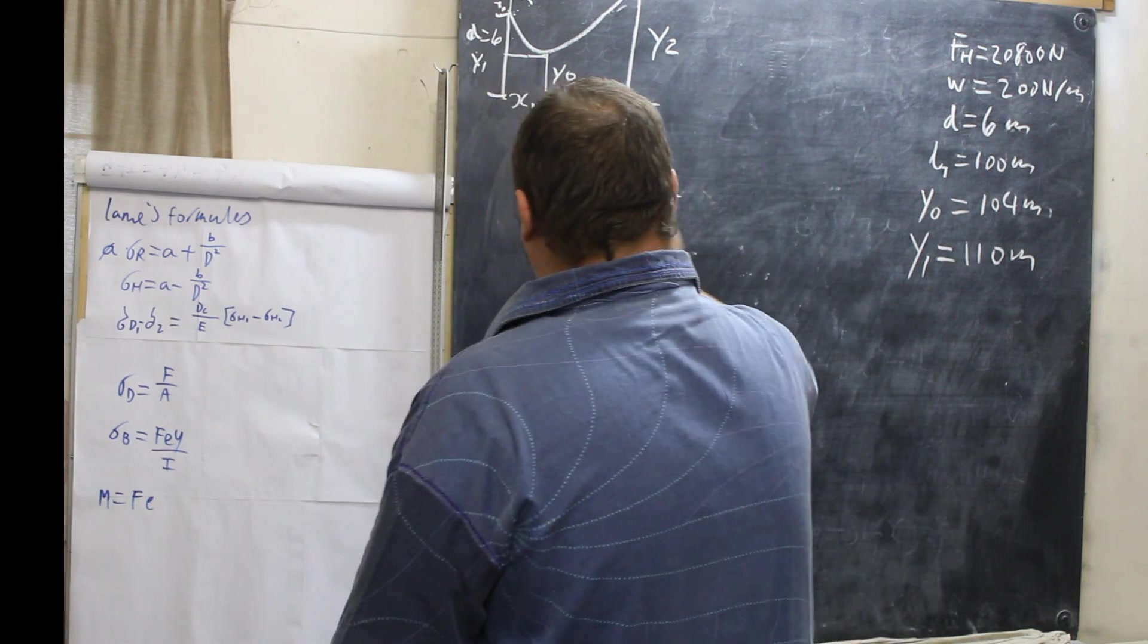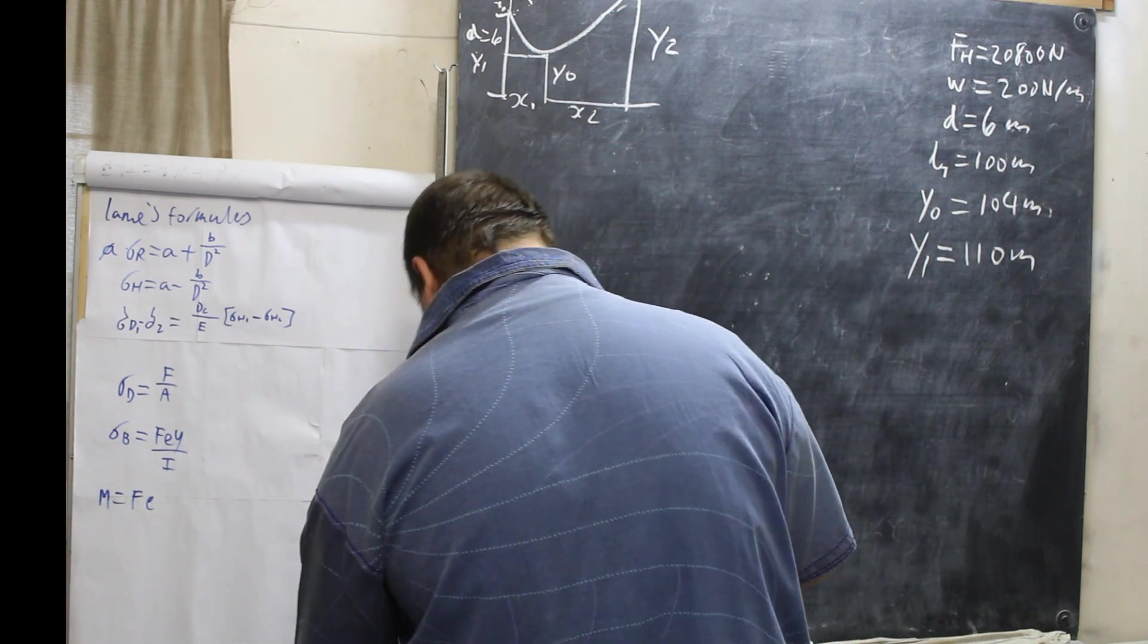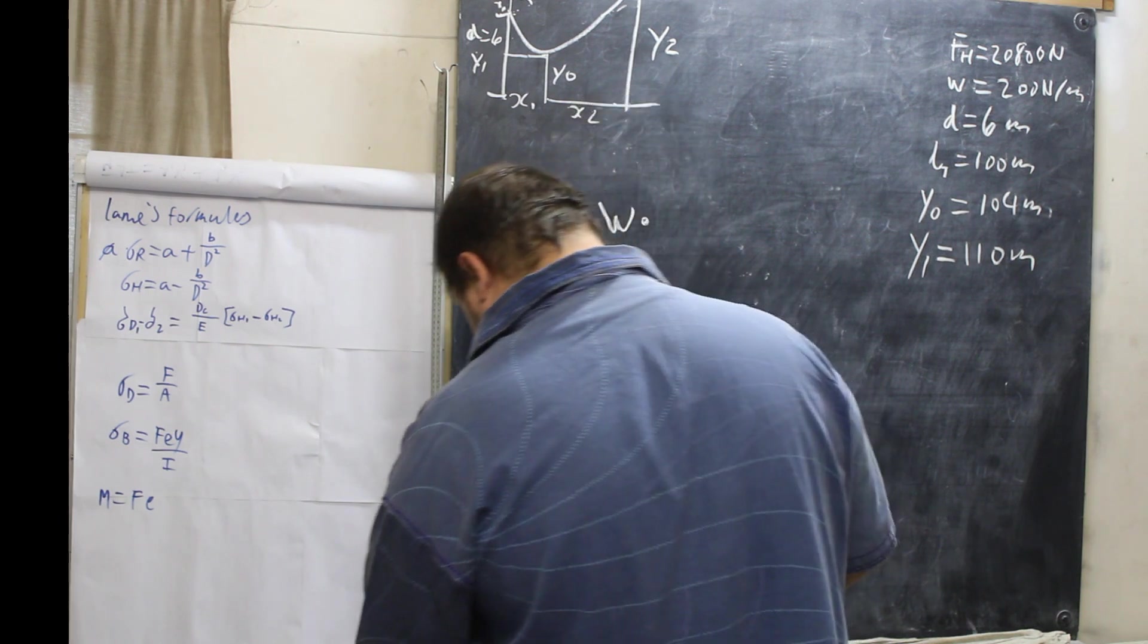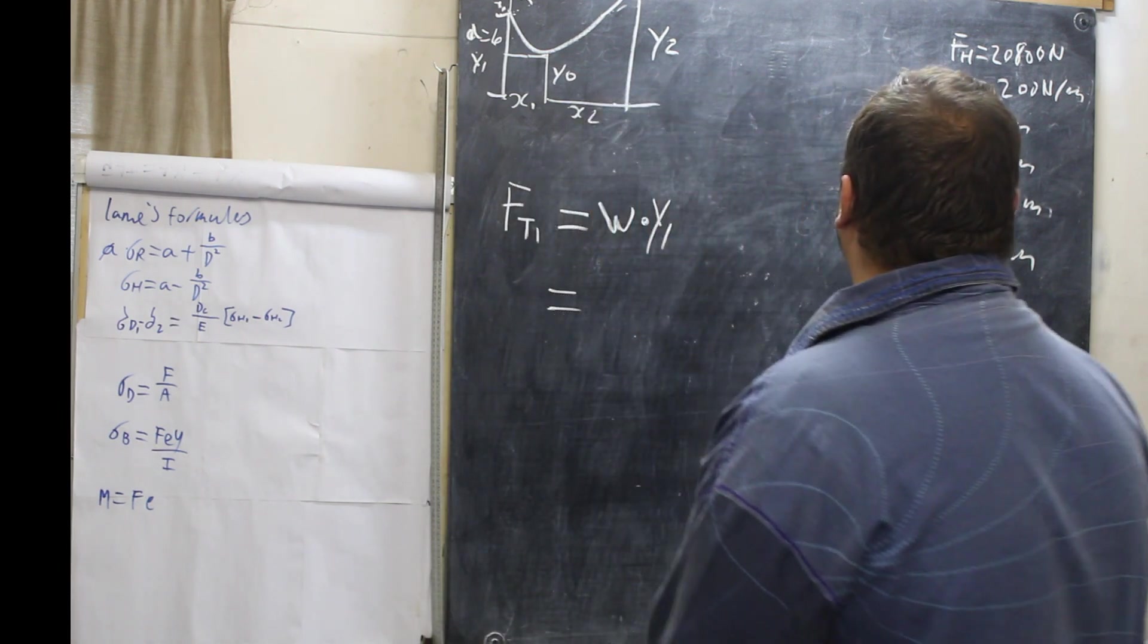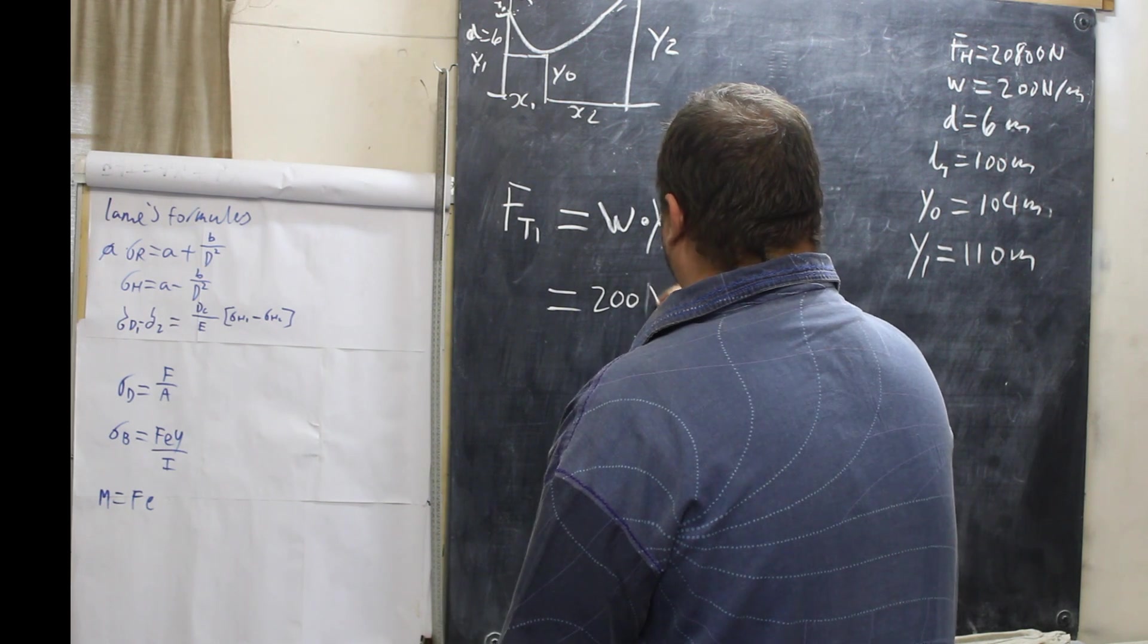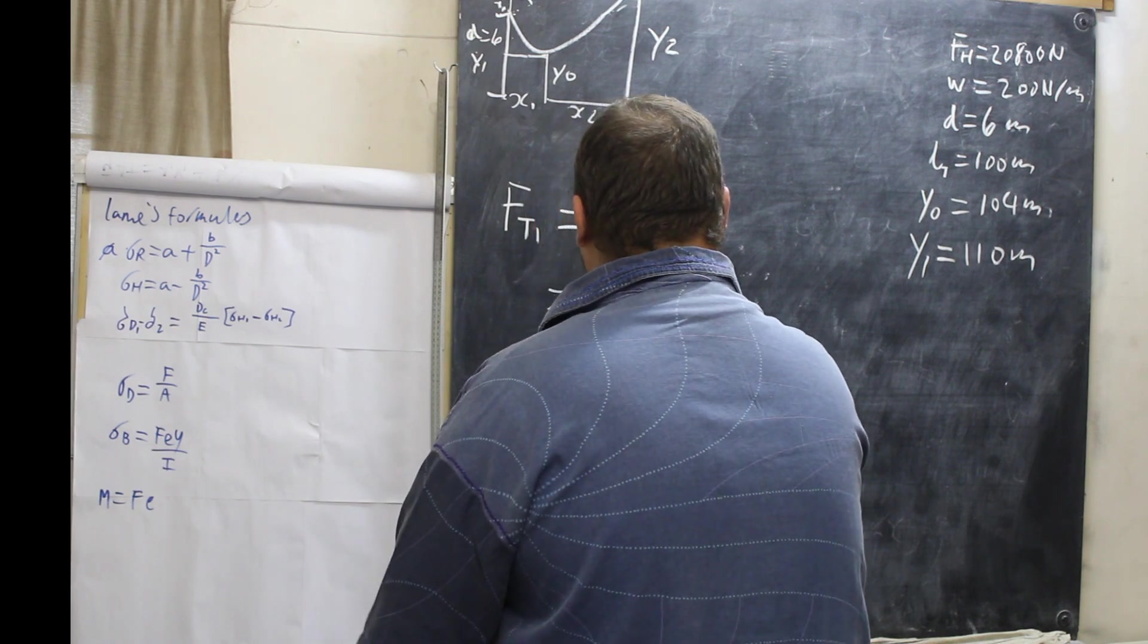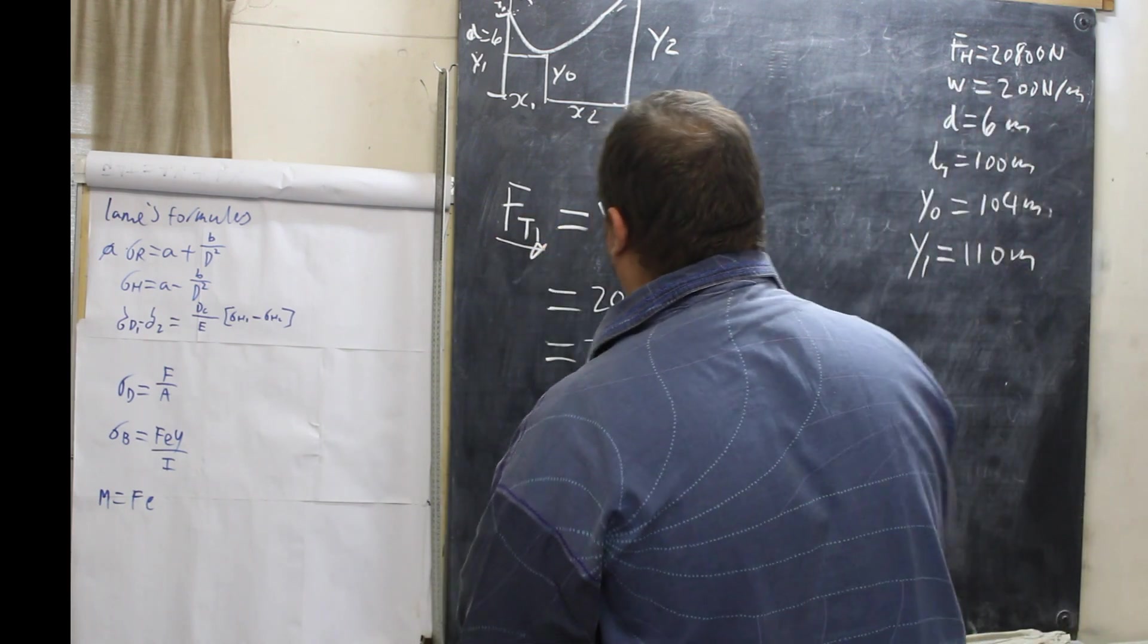Y1 equals Y0 plus D. So, this whole thing here is Y1. So, from there to there is Y1. From there to there is Y2. Y1 is Y0 plus D. So, it is Y0 plus 6. So, this will be 104 plus 6, which is 110 meters. My mistake, it's meters because we're dealing in lengths. So, Y1 is equal to 110 meters. Now, what we need to do is work out F total 1.